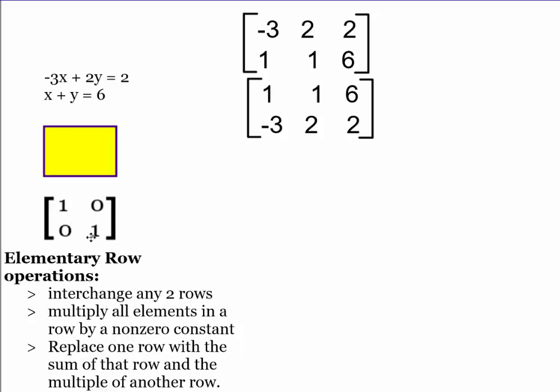Next thing we want to do is get this to be a zero. So I've got 1, 0, 0, 1. I want this to be a zero. So going back to our rules, I can multiply all the elements in a row by a non-zero constant. I can multiply it by something other than zero. If I multiply it by zero, everything turns zero, and you're out of luck.